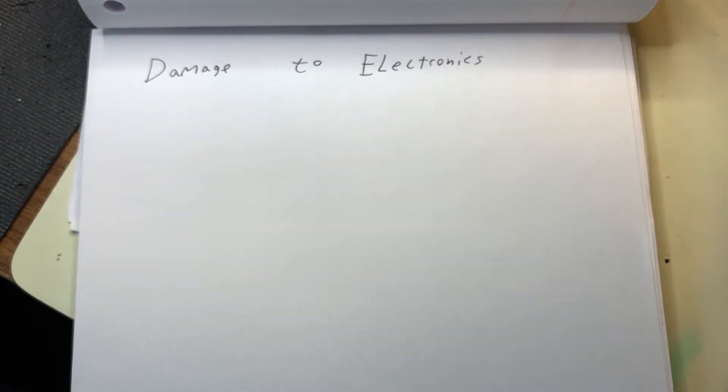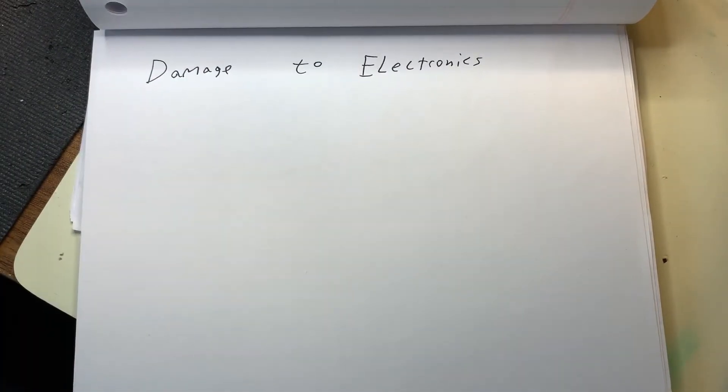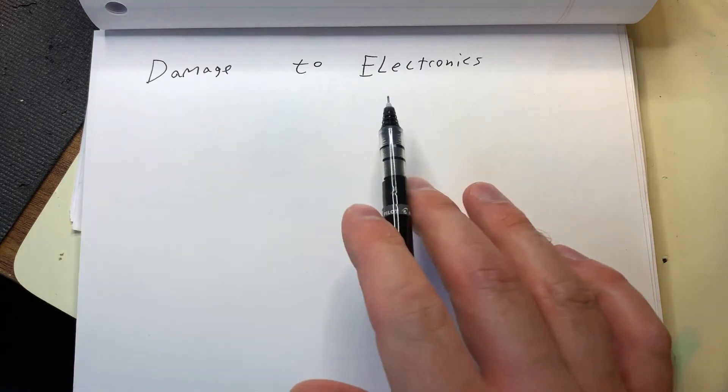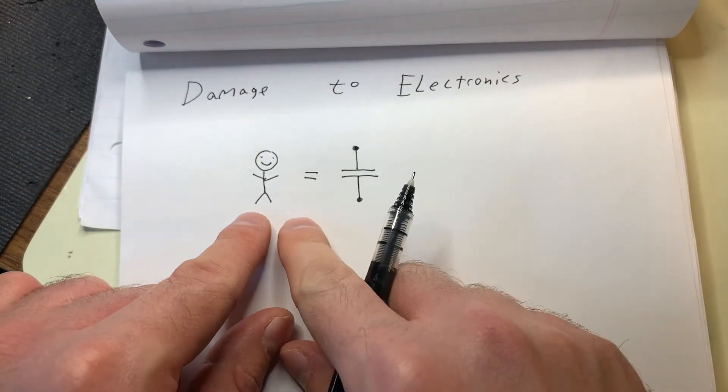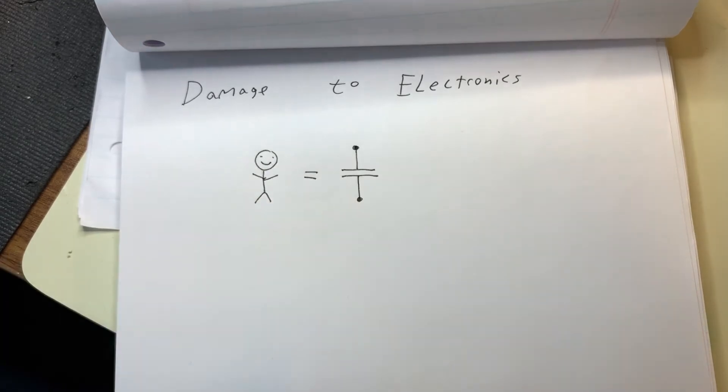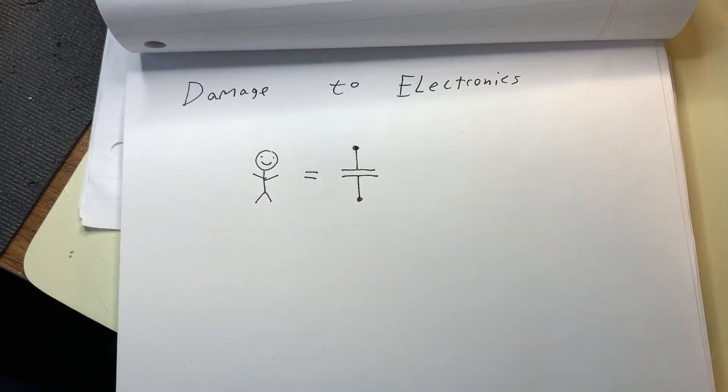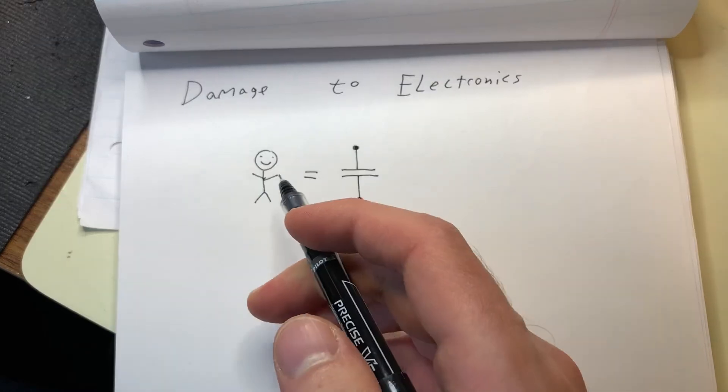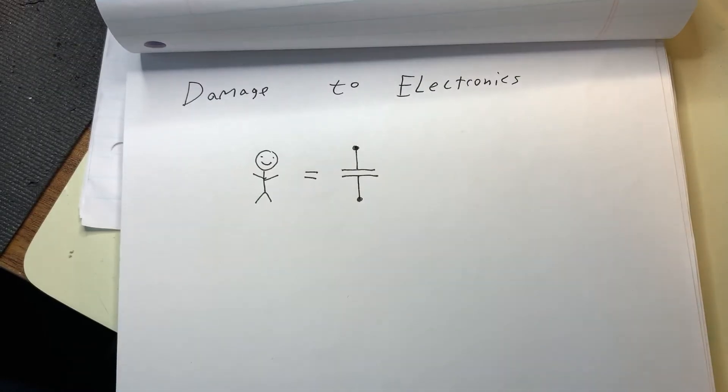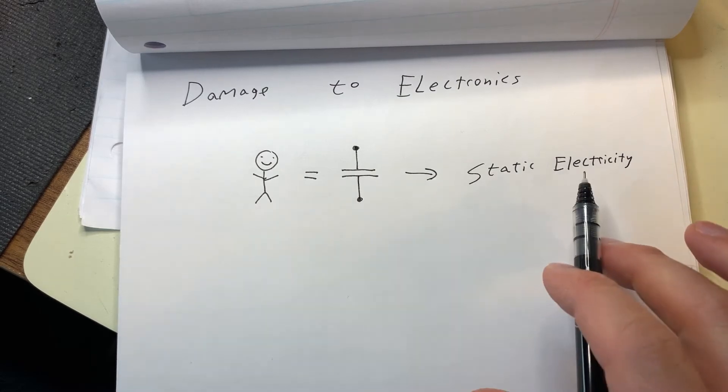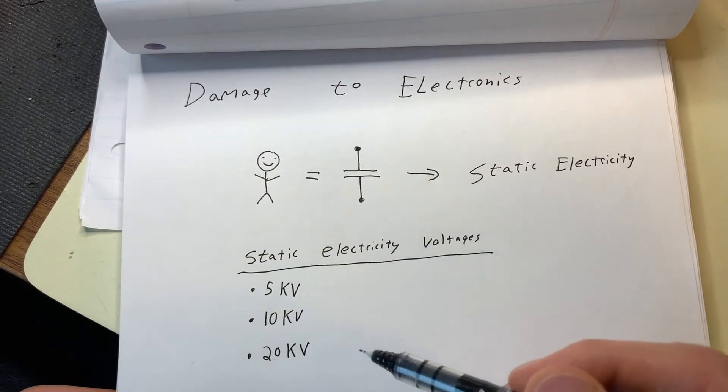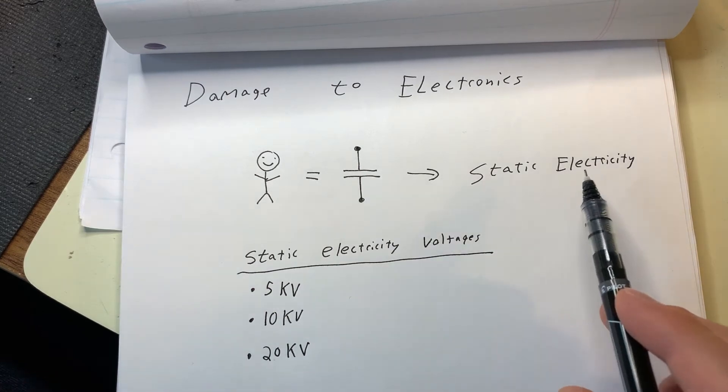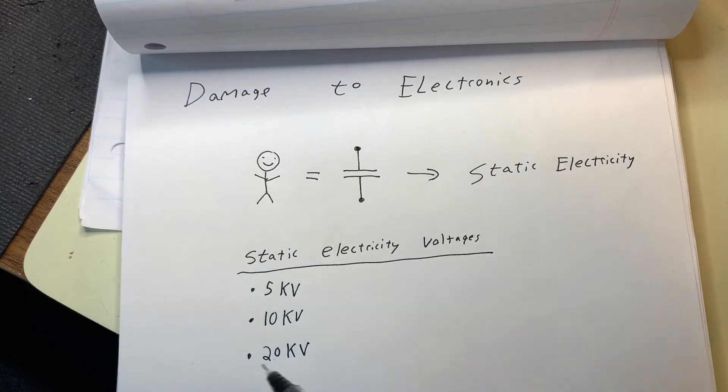But the primary purpose of an ESD wrist strap is to prevent damage to electronics. And primarily this is because people are capacitors. Every human body has some amount of capacitance, so your body can physically store some electricity. And typically this is referred to as static electricity.